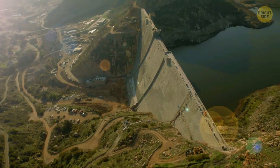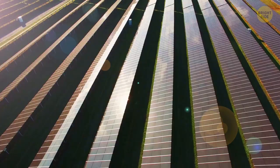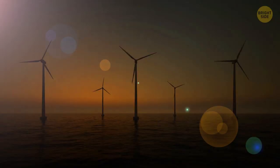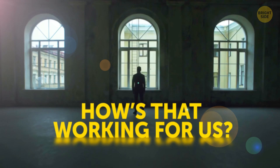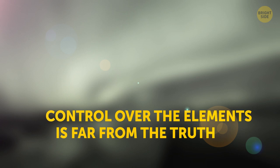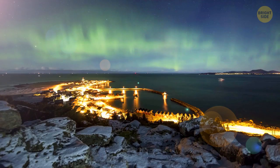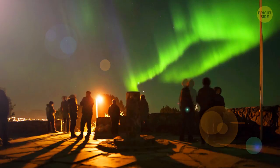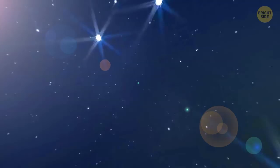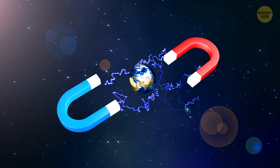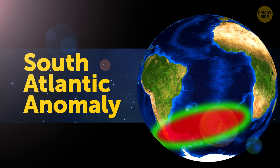So, we humans like to think that we know about and can control everything that happens on our planet. And how's that working for us? Control over the elements is far from the truth. Because right now, somewhere above our heads, in addition to climate change, the Earth's magnetic field keeps weakening at an alarming speed. And the region that concerns scientists more than any other is called the South Atlantic anomaly. But let's start from the very beginning.